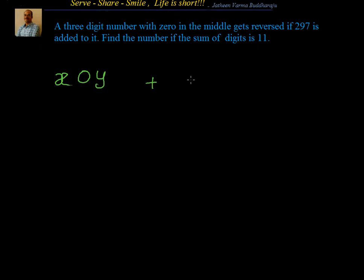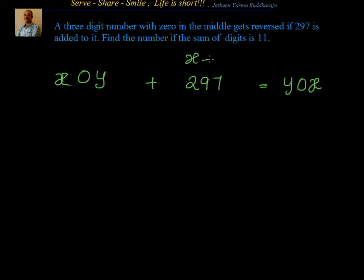If you add 297, it gets reversed. So x0y will become y0x. A three-digit number with zero in the middle gets reversed if 297 is added. We have another condition also: the sum of the digits, x plus y, is equal to 11.